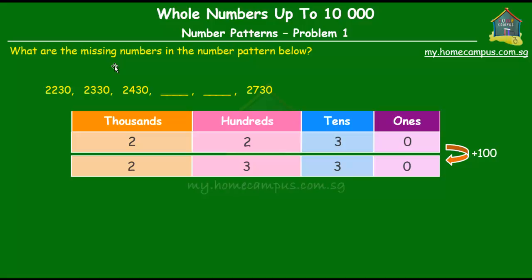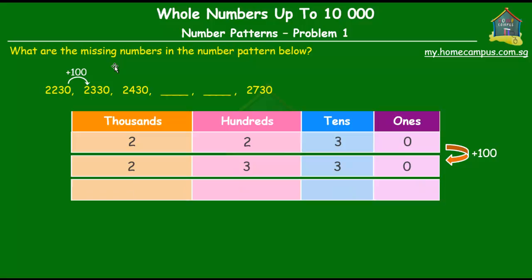So we compare the second and the third now. The third number is 2430. Again, between the second and the third, no difference in the ones, no difference in the tens. There's a difference of one in the hundreds and there is no difference or change in the thousands. So again, what we see here is in going from the second number to the third number, the number increases by 100.